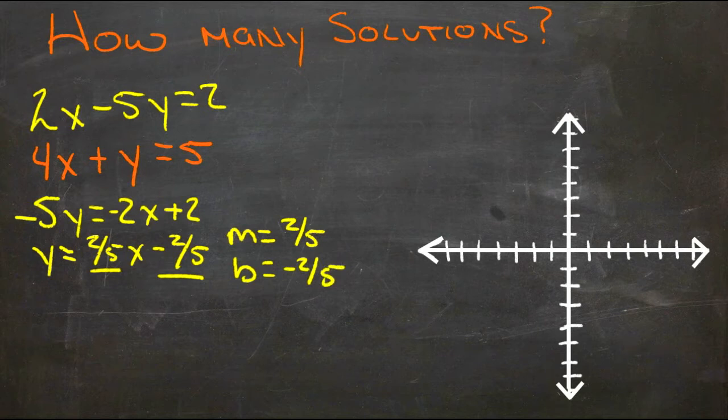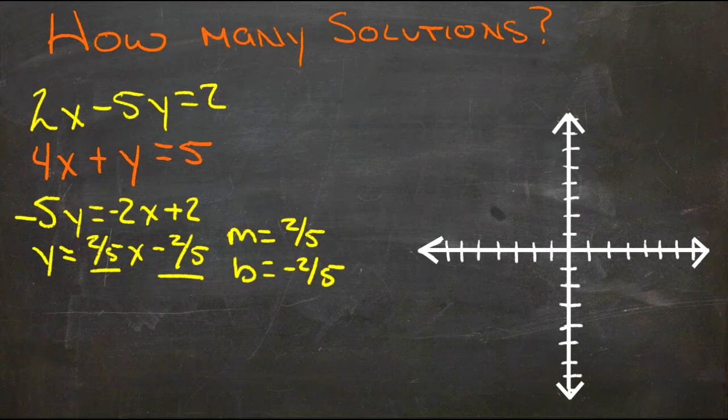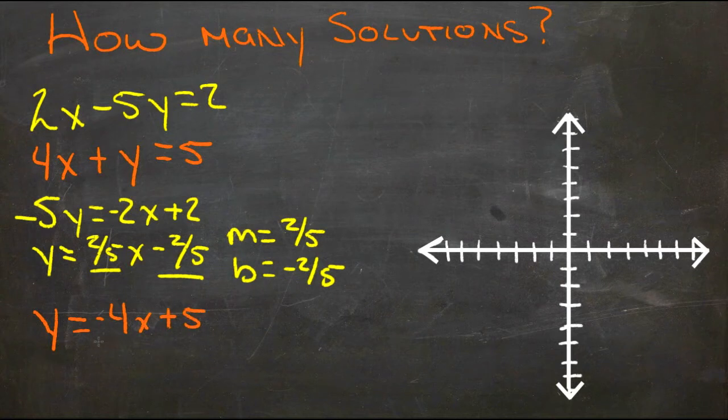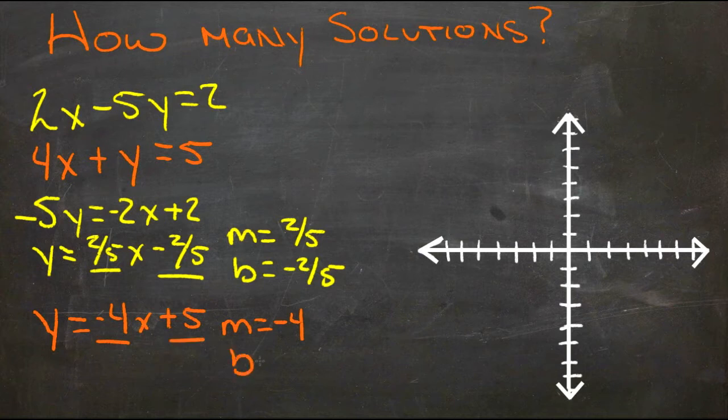Then for our other equation, all we need to do to put it in y equals mx plus b form is subtract 4x from both sides. We'll get y equals negative 4x plus 5. So the m here is negative 4, and the b is 5.